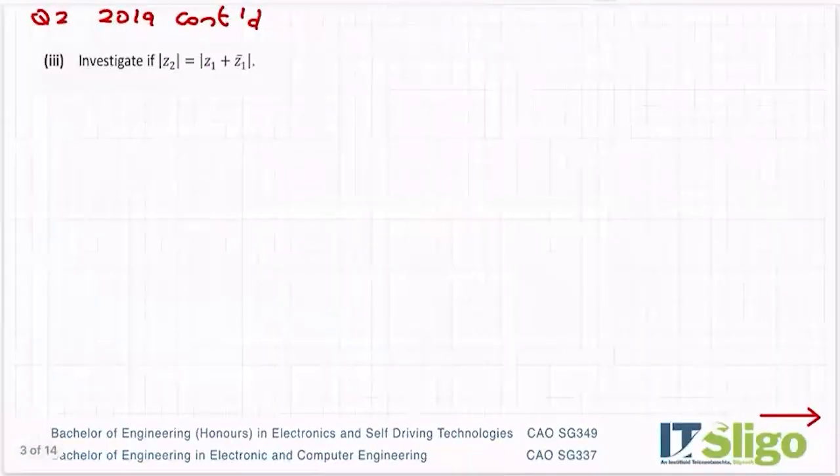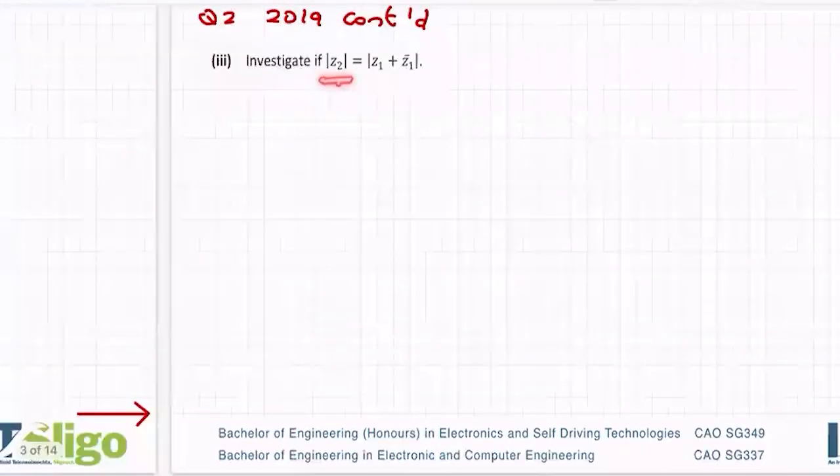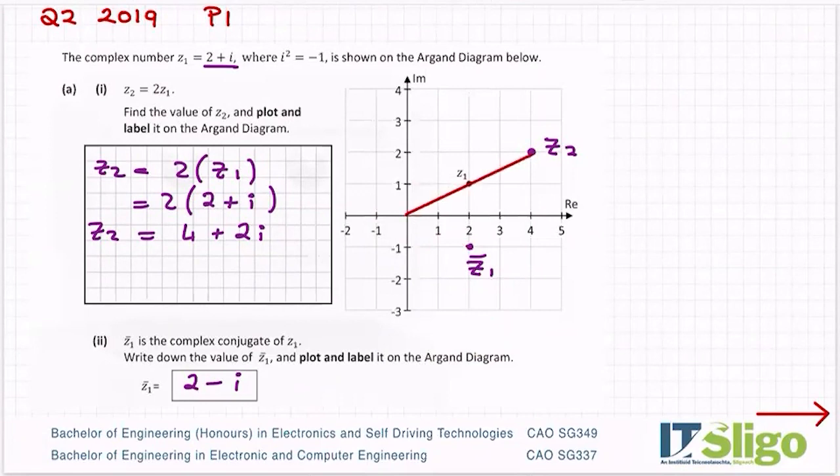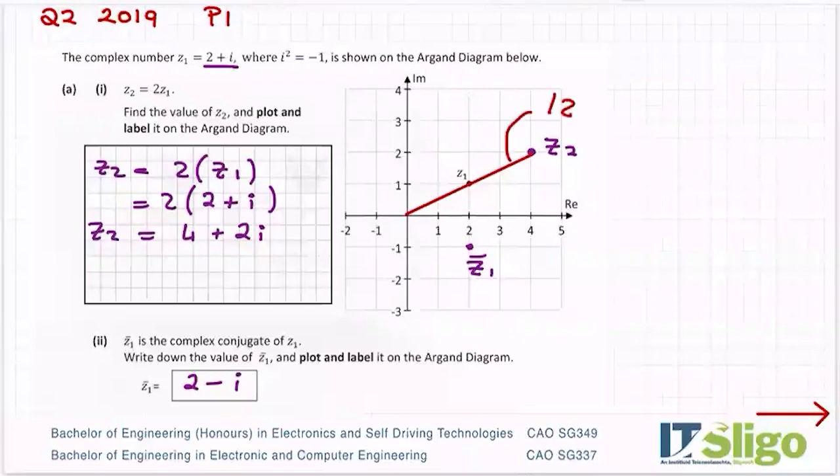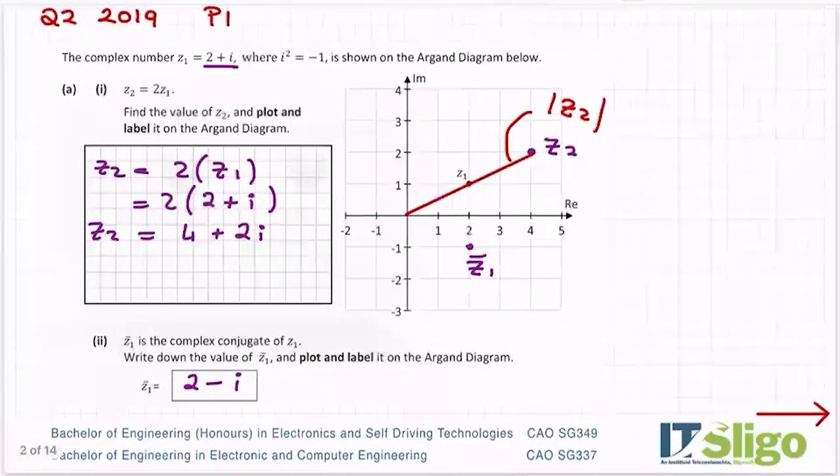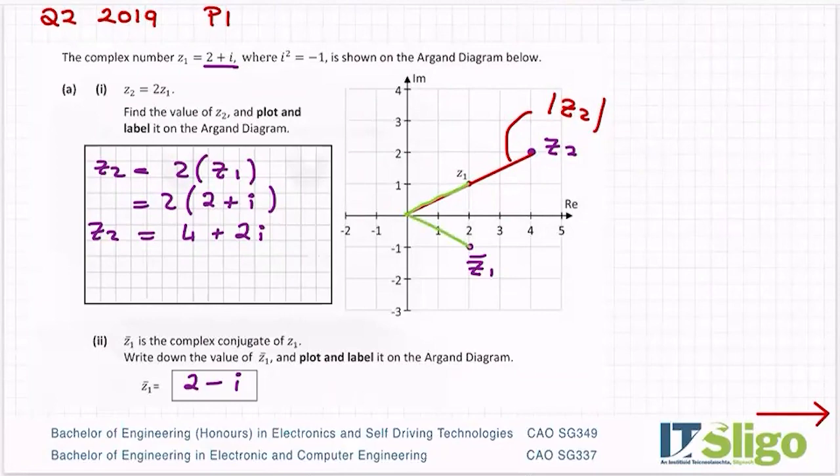So the question says investigate if the modulus of Z2, so this distance here, if that's the same as these two little bits added together. Is it the same as this one added to this one? Let's investigate. Let's see.